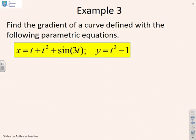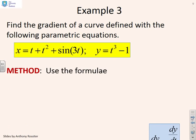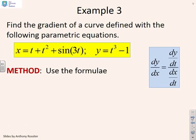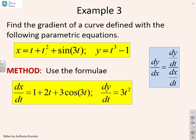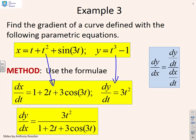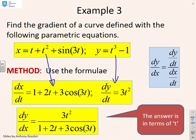For a slightly messier example: x equals t plus t² plus sin(3t) and y equals t³ minus 1. The technique is identical — remind ourselves of the formula dy/dx = (dy/dt) / (dx/dt), then differentiate each expression. So dx/dt equals 1 plus 2t plus 3cos(3t), and dy/dt equals 3t². Therefore dy/dx equals 3t² divided by (1 + 2t + 3cos(3t)). The answer is again in terms of the parametric variable t.